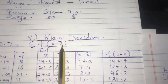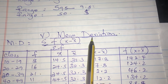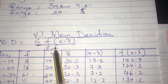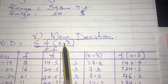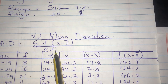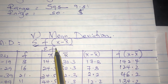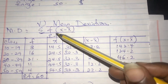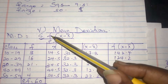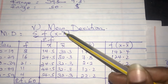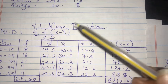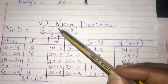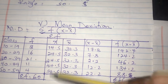The formula for calculating mean deviation is: summation of f times |x minus x̄|, divided by summation f. According to this formula, we need the column of f, the column of x, the column of x̄, the column of x minus x̄, and then the column of f times x minus x̄.